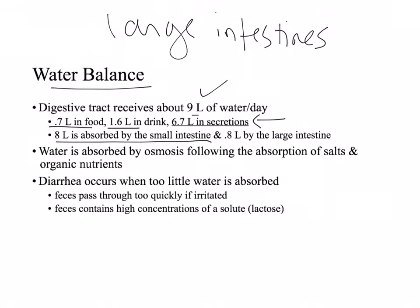About eight liters of water is going to be reabsorbed by the small intestines, and about a liter is going to be absorbed by the large intestines. The small intestines are really important for absorption. Water is absorbed by osmosis — it follows salt, so when salt or organic compounds like amino acids go in, the water will follow.